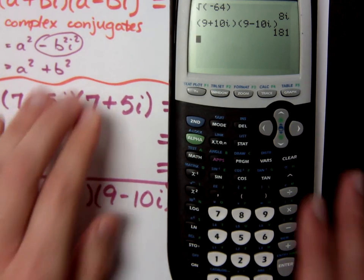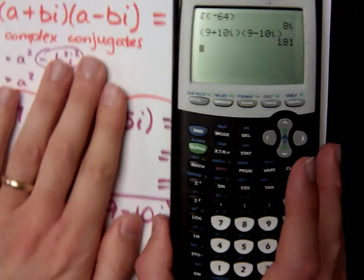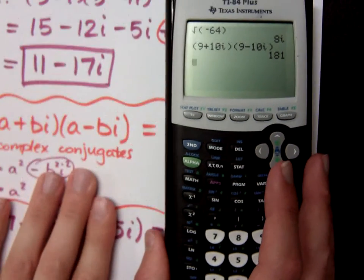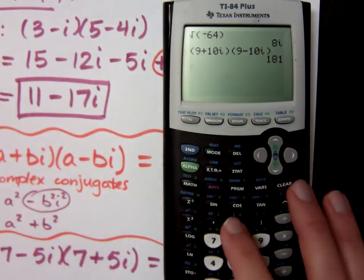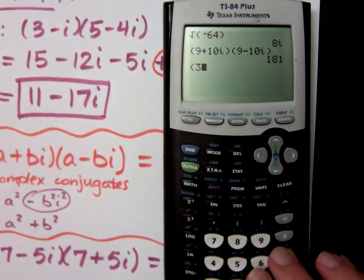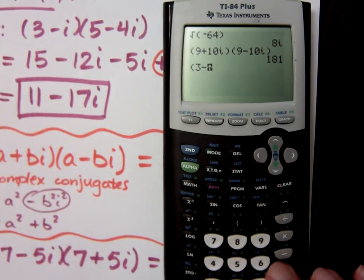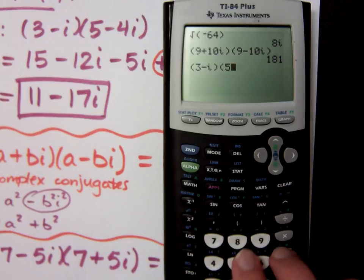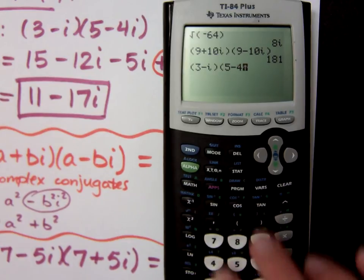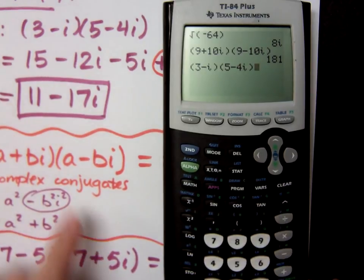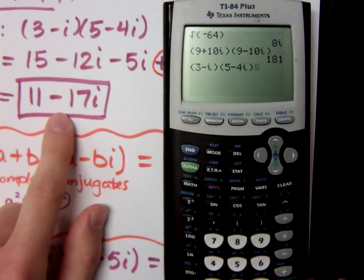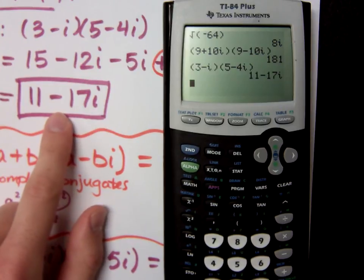The expression that we have here at the top: if I type in 3 minus i, times 5 minus 4i, we have an answer that should be 11 minus 17i. Got it.